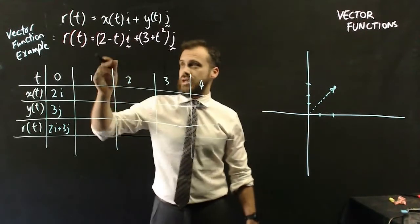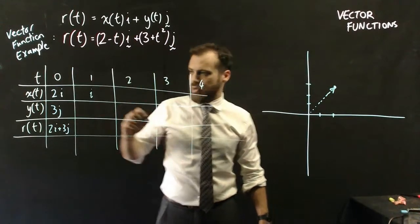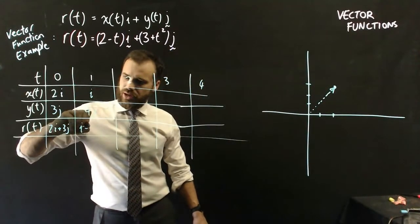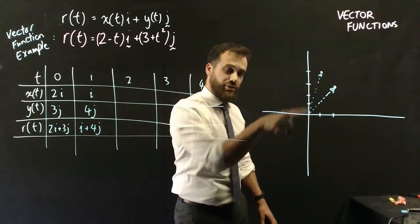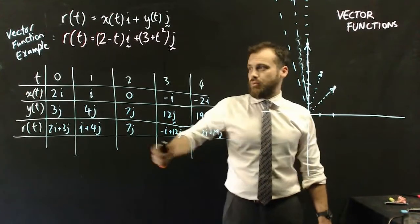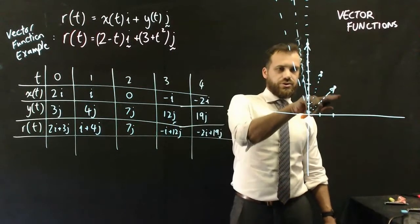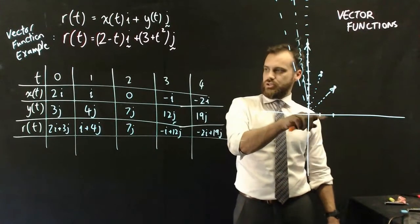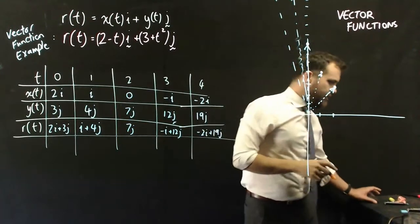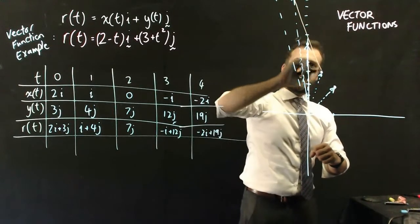At time 1, x equals 2 minus 1, which is 1, so 1i; and y equals 3 plus 1 squared, which is 4, so 4j. The vector at time 1 is i plus 4j. We're plotting points using the parameter t — at time 0, x equals 2 and y equals 3; at time 1, x equals 1 and y equals 4. If I sketch all the points, I get something that looks like a quadratic.